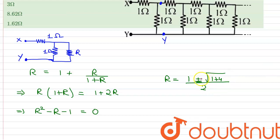We will reject the minus root because it is negative and resistance will not be negative. Therefore, on solving we can say that R is equal to 1 plus root 5 divided by 2 ohms, and on calculating this we find out that this is equals to 1.62 ohms.